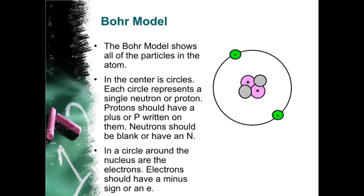Bohr model. The Bohr model shows all of the particles in the atom. In the center is circles. Each circle represents a single neutron or proton. Protons should have a plus or P written on them. Neutrons should be blank or have an N. In a circle around the nucleus are the electrons. Electrons should have a minus sign or an E.